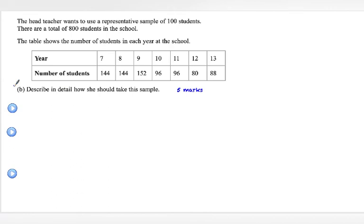Here's another exam style question. The head teacher wants to use a representative sample of 100 students. There are a total of 800 students in the school. The table shows the number of students in each year at the school. Describe in detail how she should take this sample. And that's for 5 marks.